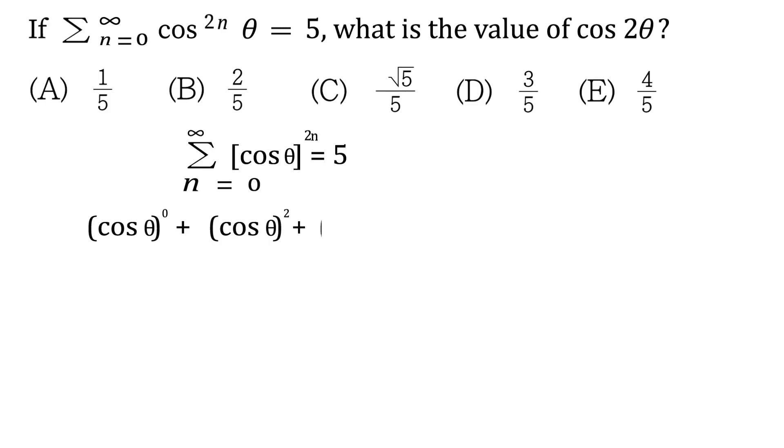And then you'll have cos theta to the power of, when n is 2, it'll be 4, plus cos theta to the power of, when n is 3, this will be 6, and so on. And then it just keeps on going like that until infinity. And that whole sum is somehow equal to 5.